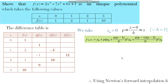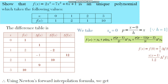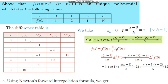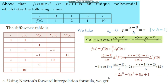Using Newton's forward interpolation formula with h = 1, we get: f(x) = f(0) + x/1! · Δf(0) + x(x-1)/2! · Δ²f(0) + x(x-1)(x-2)/3! · Δ³f(0). After simplification, we obtain the cubic polynomial corresponding to this discrete data, and the required unique polynomial is f(x) = 2x³ minus 7x² plus 6x plus 1.